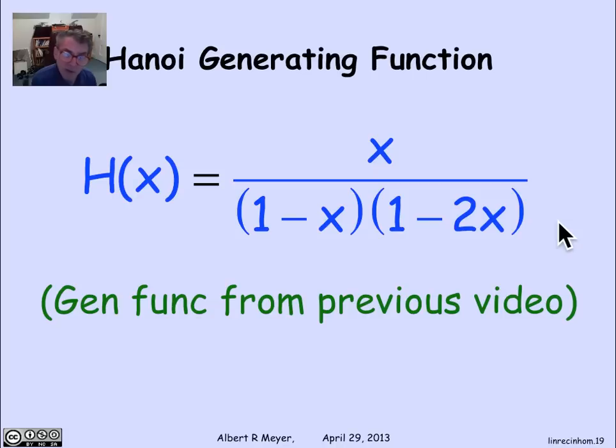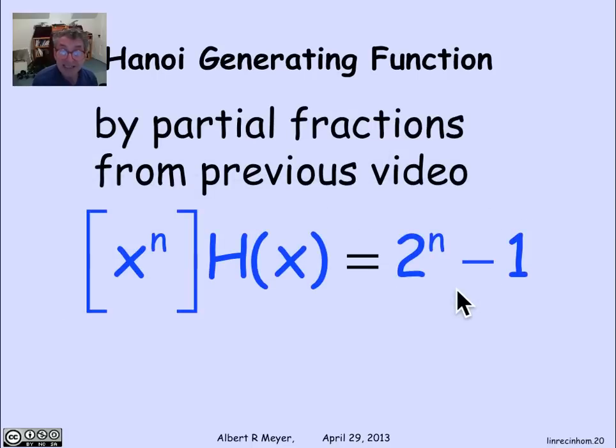Now I don't know whether you remember this, but we actually used this very example in a previous video when we were trying to illustrate the partial fraction method. And we already figured out what the coefficient of what hn is. What's the coefficient of x to the n in this generating function? Namely, it's 2 to the n minus 1. So it takes 2 to the n minus 1 moves to move a stack of n disks. And that means that once you start getting a lot of disks, this is going to become a prohibitive procedure because of the exponential growth.